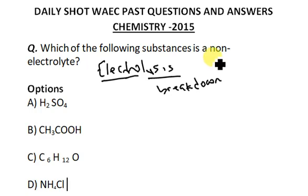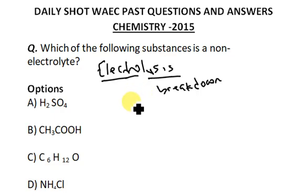Not all compounds allow electricity to pass through them for electrolysis, and not all compounds undergo chemical breakdown. That's why there are some substances called non-electrolytes and some called electrolytes — just the same way we have non-conductors and conductors. Electrolytes are ones that allow electricity to pass through them for chemical breakdown, whereas non-electrolytes do not.